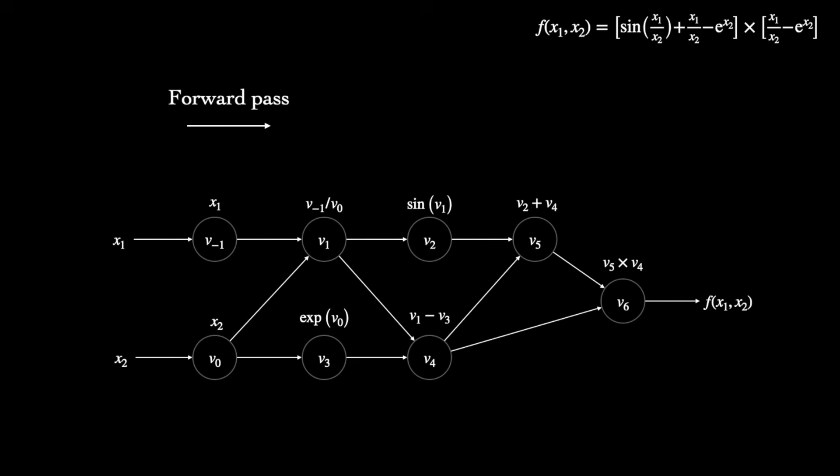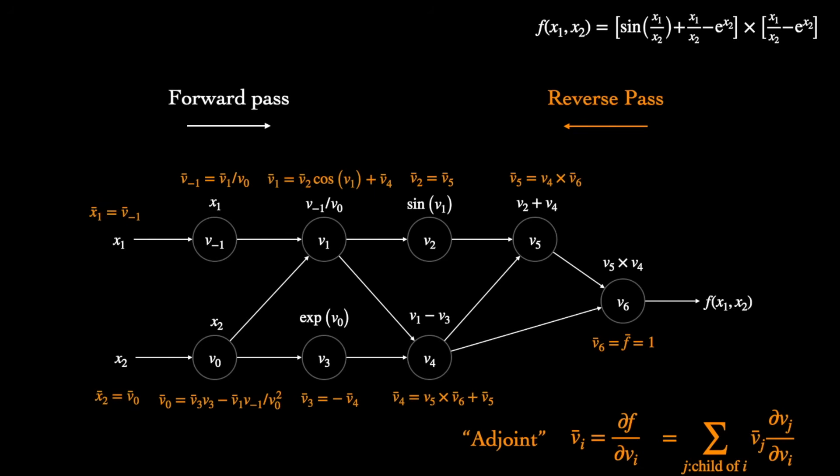Rather than propagating derivatives forward, they'll be propagated backwards from the output. This is carried out in a two-part process. We first start with a forward pass through the function, evaluating intermediate variables as we did before. But instead of simultaneously computing derivatives, we store the dependencies of the expression tree in memory. Then, after completion of the forward pass, we compute partial derivatives of the output with respect to the intermediate variables, quantities known as adjoints, which we'll denote with v bar. To obtain the adjoint v bar i for a particular node, we look at each of the node's children, multiply the adjoint of the child by the partial derivative of the child with respect to vi, and then take the sum of these products. So vi's contribution to the final output is determined both by how each of its children affect the output and how it affects each of its children.